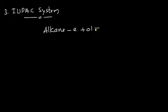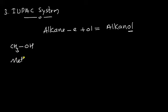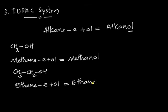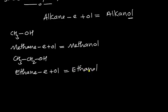Sometimes we have to mention the position of the OH group. For example, CH₃OH has one carbon — it is methane, remove 'e' and add 'ol' — giving methanol. For CH₃CH₂OH, two carbons gives ethane, minus 'e' plus 'ol' gives ethanol.